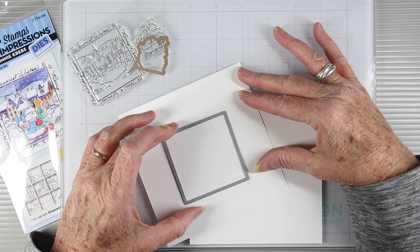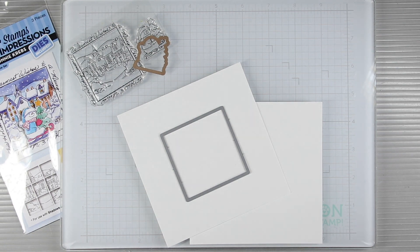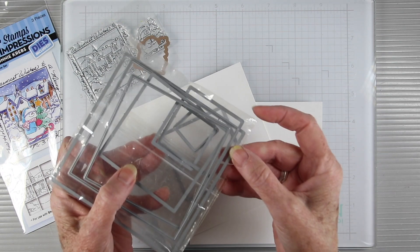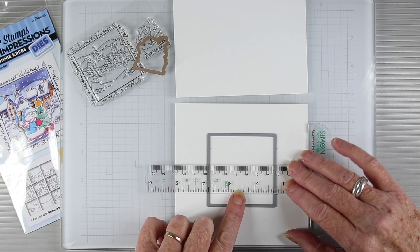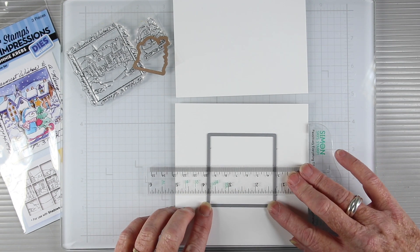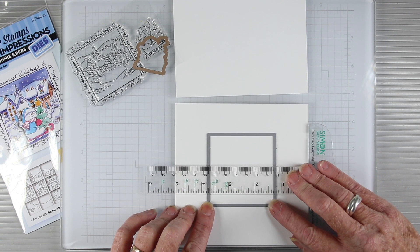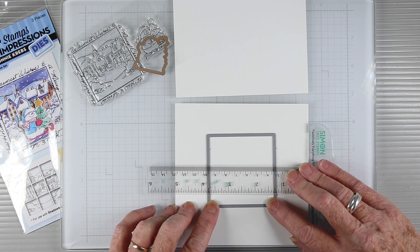I've cut two panels of white cardstock five inches by five inches and I'm using the simonsaysstamp rectangle dies to cut a window in the center. This die also measures two and a half by two and a half, and if you need help centering this you can use your six inch t-square.